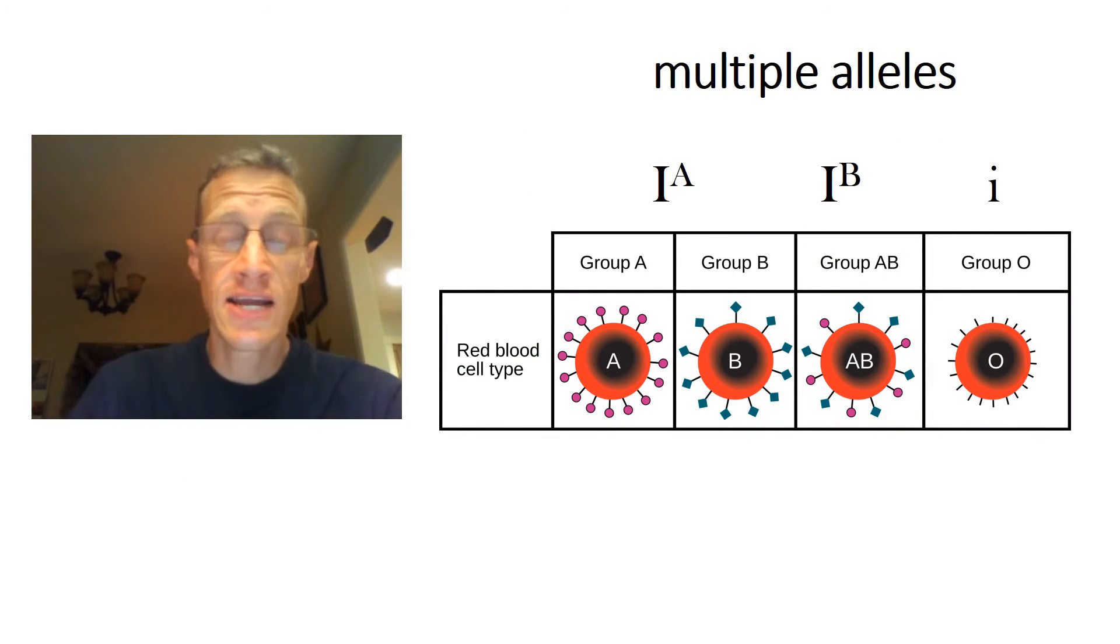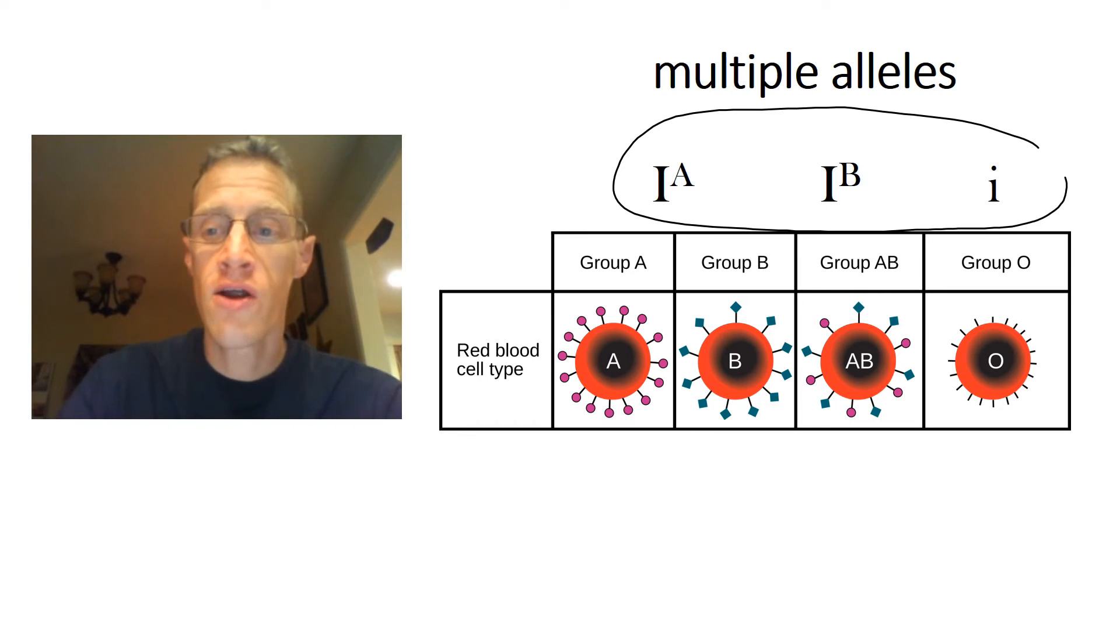Multiple alleles shouldn't need an explanation, but we'll give one anyway. It simply means that there are more than two versions of a gene. And a common example is the ABO blood group in humans. As you can see here, there are not two, but three versions of this gene. And even though there's three versions, you still only inherit two because you have two parents.